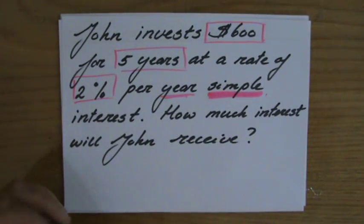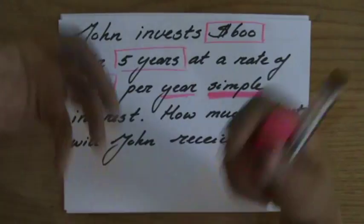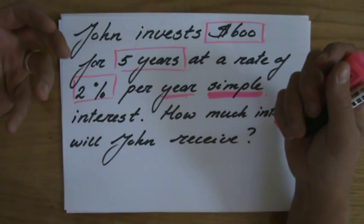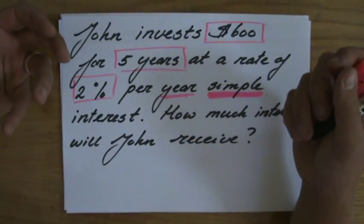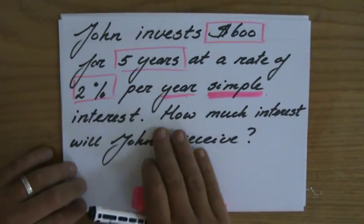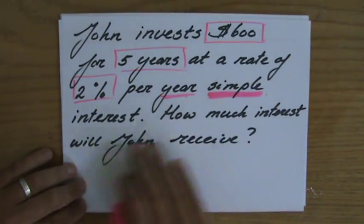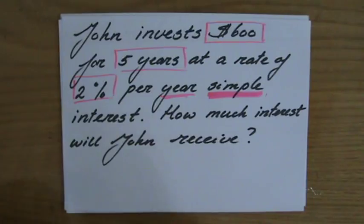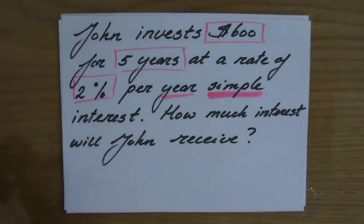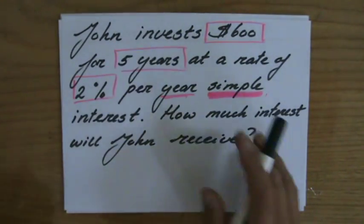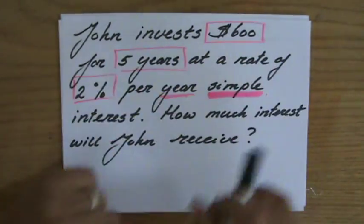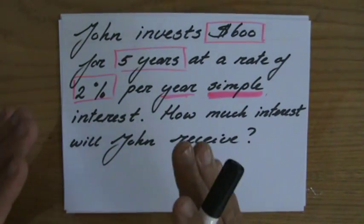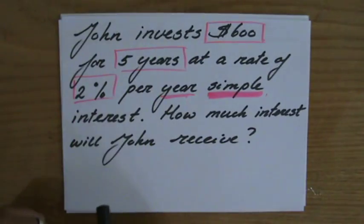In the previous example the question was how much money will I have, but in this case it's how much interest will John receive. We'll get there in a minute — first of all: six hundred dollars, for five years, two percent per year, simple interest.